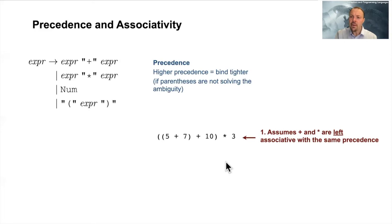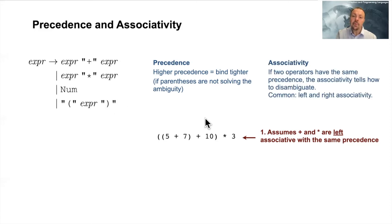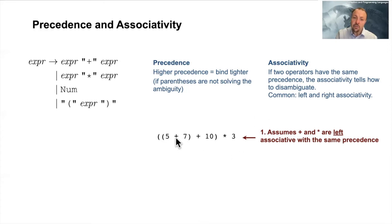So what is precedence? Precedence basically tells you how tightly each of the operators are binding. If it's got higher precedence, it's binding tighter. You can also use parentheses to resolve this if your grammar includes parentheses, which in this case it does. If two operators have the same precedence, we need to also disambiguate, and then there is something called associativity. The most common ones are left and right associativity. In this expression we saw that we had left associativity — we are binding to the left.